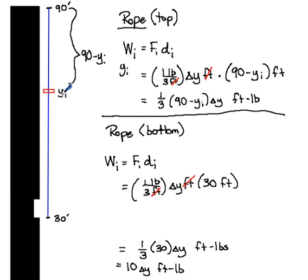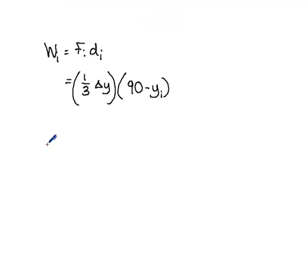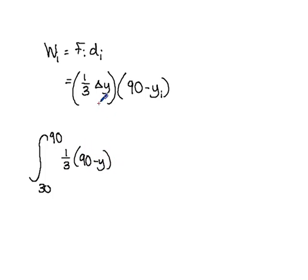The distance we're moving that slice is 90 minus y_i. To add up all these works, we sum from the 30-foot level (not zero — there are no rope slices from 0 to 30) up to 90 feet. That gives us the integral from 30 to 90 of one-third times (90 minus y) dy, which gives us the amount of work to lift the remaining rope to the top of the building. And that's how this type of problem is done.